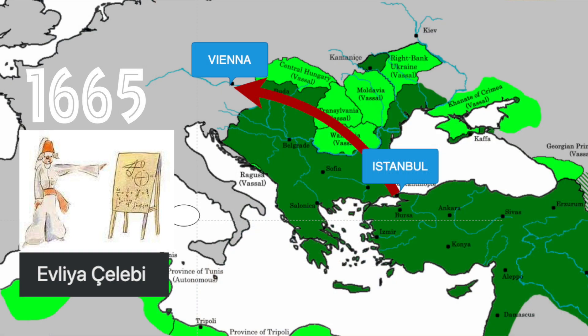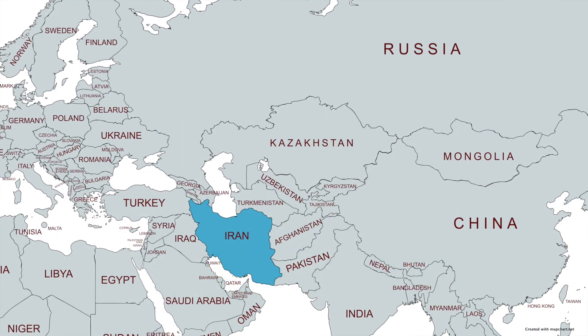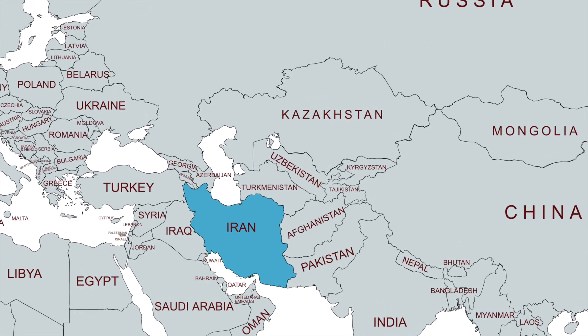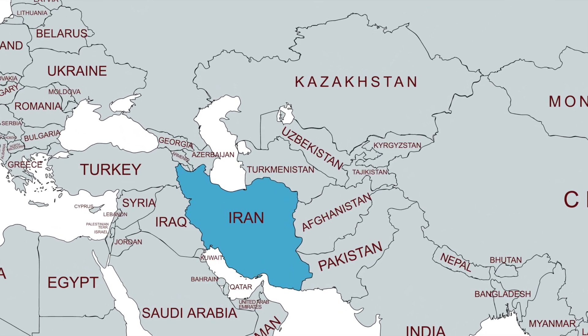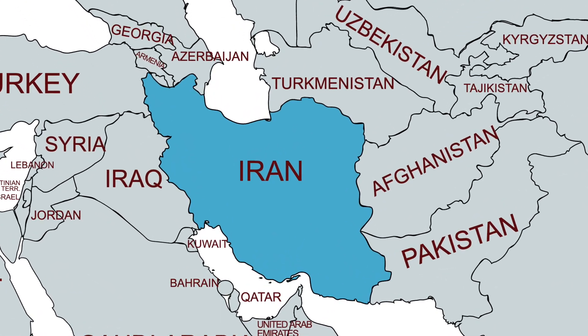It is now the year 1665, almost a hundred years later. The Ottoman traveler Evliya Çelebi arrives in Vienna, the capital of the Habsburg Empire. A similar story — he marvels at the similarities between the German language and the Persian language. Today, Persian — also known as Farsi — is the national language of Iran. But back then, it was the language of aristocracy in many kingdoms and empires, like the Ottoman Empire and the Mughal Empire. Now let's compare words from Persian and German.